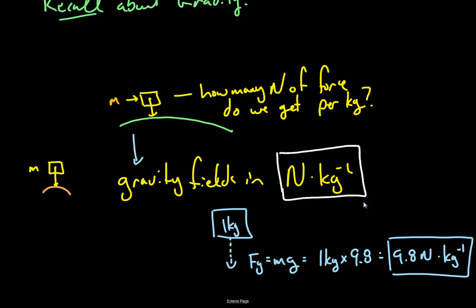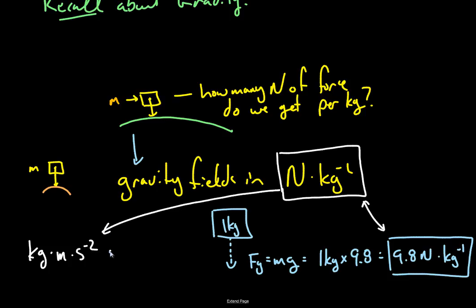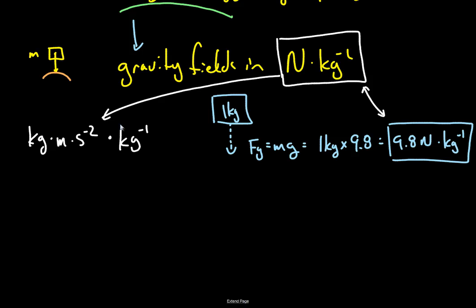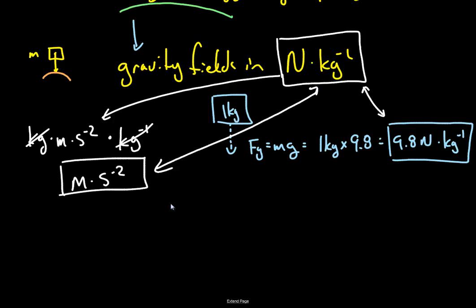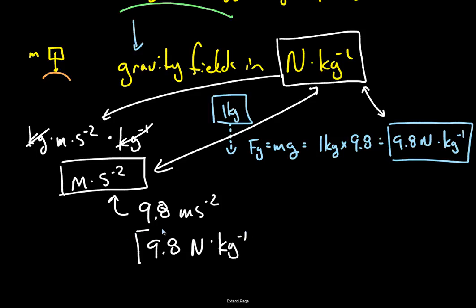It's the acceleration due to gravity and it's the gravitational field strength — why should this be so? The newton is made up of kilogram·meter per second squared. So newtons per kilogram gives us kilogram·meter per second squared divided by kilogram, which leaves meters per second squared. So you can write it either way — we usually see 9.8 m/s², but sometimes it's useful to think of it as newtons per kilogram field strength, and you'll see why in a minute.